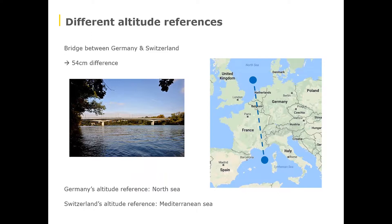There was a difference of 54 centimeters, or 21 inches, between the two parts. This happened because each country's surveyor team referred to a different reference altitude during planning. For Germany, zero meters is based on the North Sea, and for Switzerland, it's based on the Mediterranean Sea — a difference of around 50 centimeters. They found a solution in the end, but it caused quite some distraction. It's really important that you know which reference altitude you're using at any moment in time.